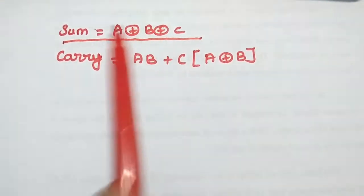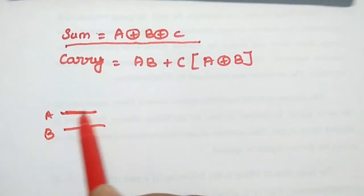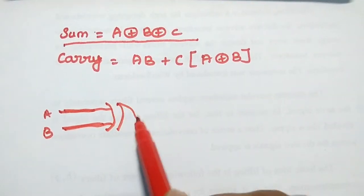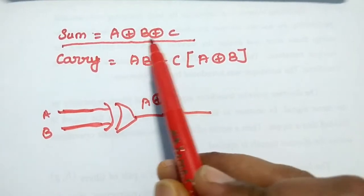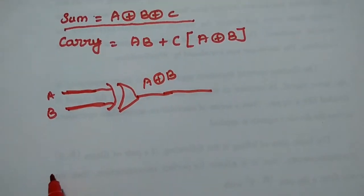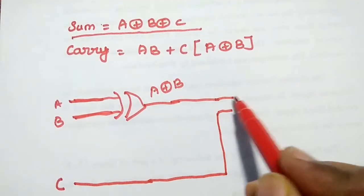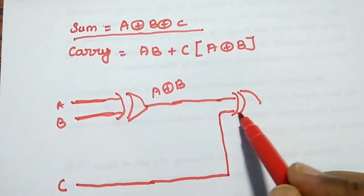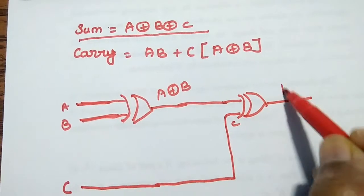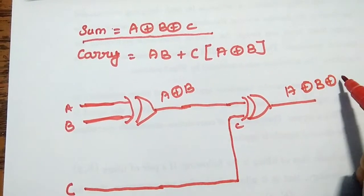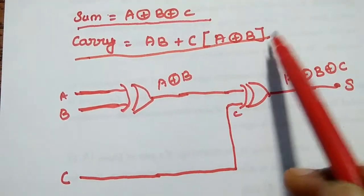So let me draw the realization of full adder using half adders. First we draw the sum: inputs A and B are given to one XOR gate, from which we obtain A XOR B. Since we need A XOR B XOR C, we give this output and C to one more XOR gate. Finally we get (A XOR B) XOR C — this is the sum.